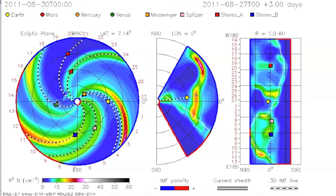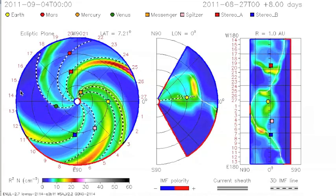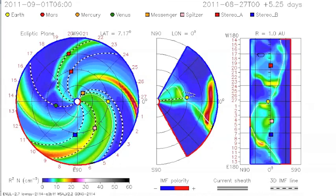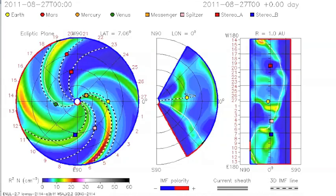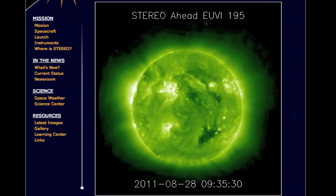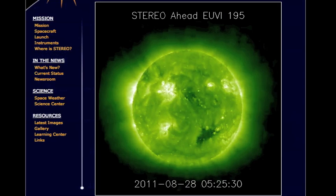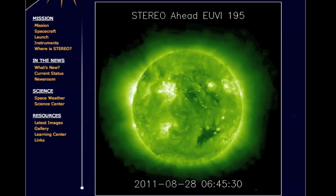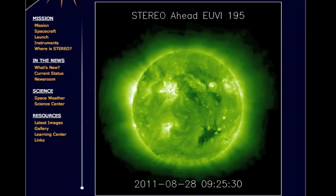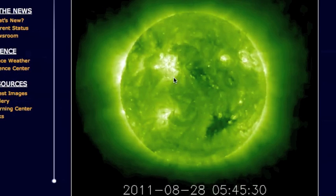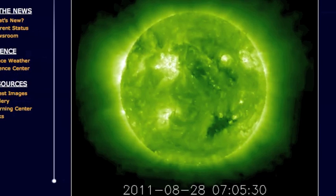Follow it here — that's the CME that you're watching. We're going to leave you with the EUVI 195 Stereo A headshot. Essentially, you're going to see just north of dead center on the Sun here. It appears that the coronal surface opens up right before the eight o'clock hour Universal Time of the 28th — that's exactly where the coronal mass ejection comes from right there. Watch how it opens up.